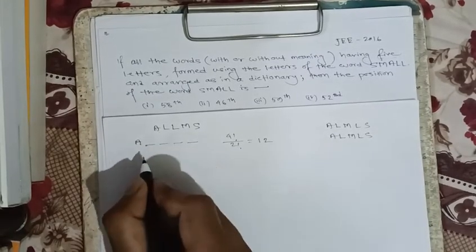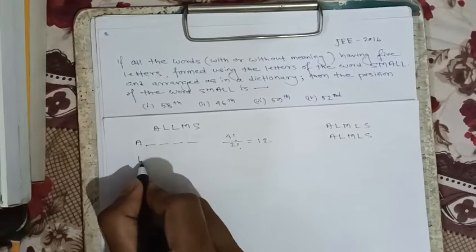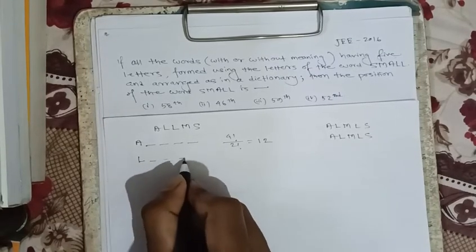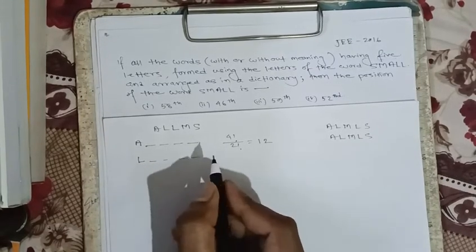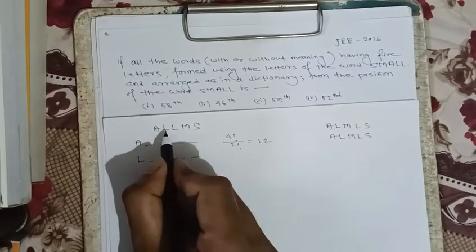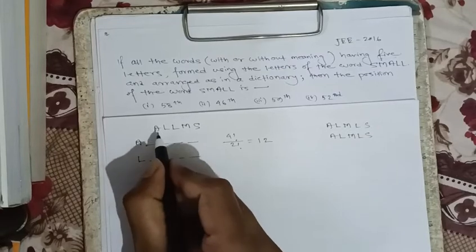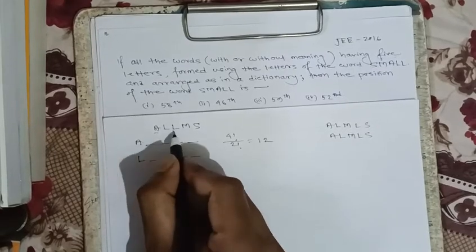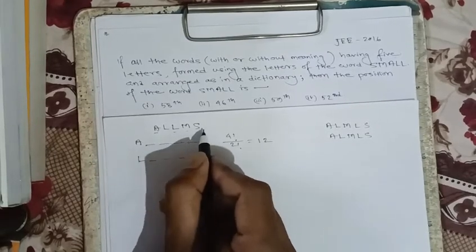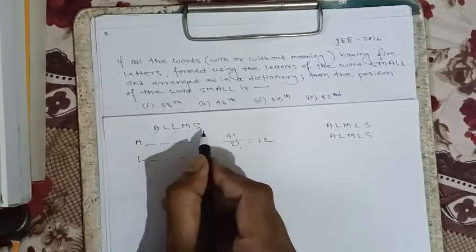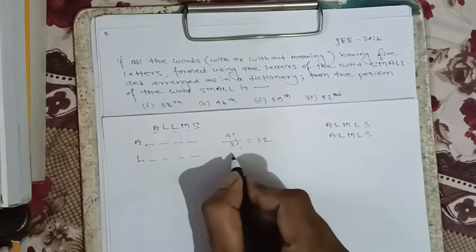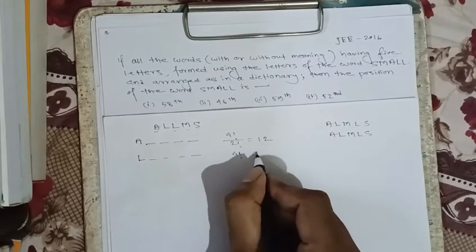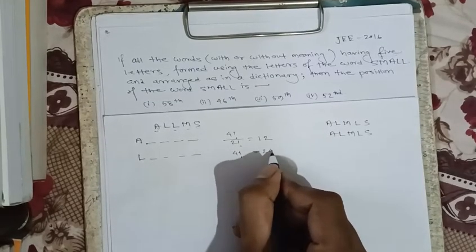Now, for words starting with 'l': we fix 'l' as the first letter and arrange the remaining 4 letters. Since those 4 remaining letters are all distinct, they can be arranged in 4 factorial ways, which gives 24 words.